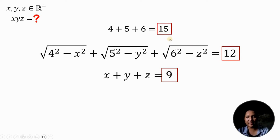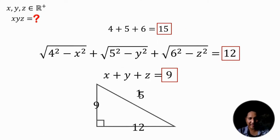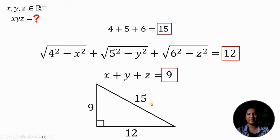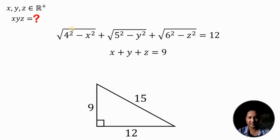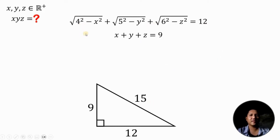Take note that 9, 12, and 15 can be the sides of a right triangle — two legs equivalent to 9 and 12, and the hypotenuse equal to 15. Now focus on the first equation: square root of (4² minus x²) plus square root of (5² minus y²) plus square root of (6² minus z²) equals 12.